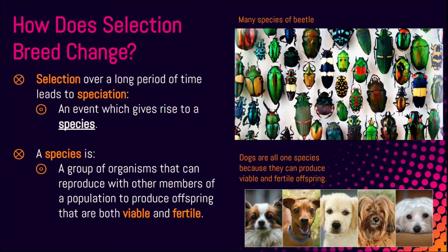How does selection breed change? Selection over a long period of time leads to speciation, which is an event that gives rise to a new species. But let's define species — a species is a group of organisms that can reproduce with other members of the population to produce offspring that are both viable and fertile.